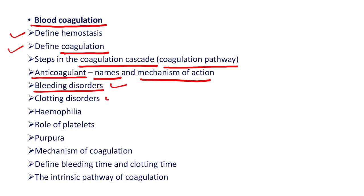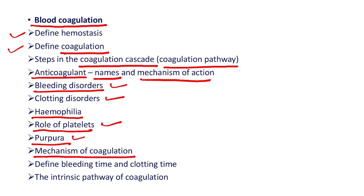Then, bleeding disorders — add a note on clotting disorders. Then, hemophilia, role of platelets in blood clotting, blood coagulation, add a note on purpura, mechanism of coagulation. Define bleeding time and clotting time. Then, add a note on the intrinsic pathway of coagulation — this sub-question is frequently asked.